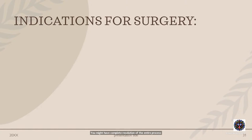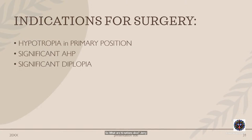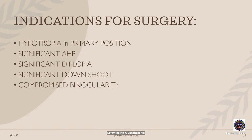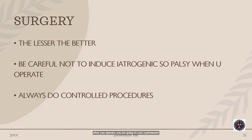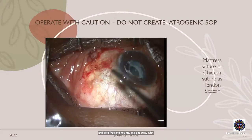Indications for surgery: hypotropia in primary position, significant abnormal head posture, significant double vision, significant downshoot, compromised binocularity, or orbital pain on motility. The principle: the lesser the better. Be careful when touching the superior oblique muscle — it is not a forgiving muscle. If you create an iatrogenic superior oblique palsy after surgery, you cause permanent down-gaze diplopia. You must do controlled, titratable procedures, not a free tenotomy.